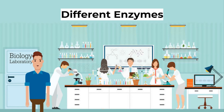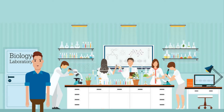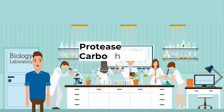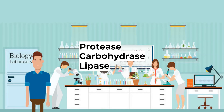Finally for today, let's look at types of enzymes. Many enzymes' names end in -ase, and you can often tell what substrate they work on by the name. Protease works on proteins — for example, pepsin. Carbohydrase works on carbohydrates — for example, amylase. Lipase works on lipids, which are fats. Maltase works on maltose molecules.